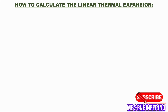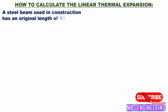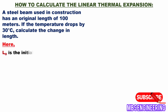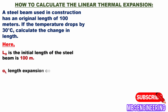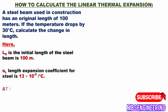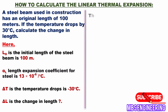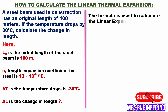A steel beam used in construction has an original length of 100 meters. If the temperature drops by 30 degrees Celsius, calculate the change in length. Given: L₀ = 100 m, alpha_L = 13 × 10⁻⁶ per °C, delta T = −30°C, and delta L is to be calculated.